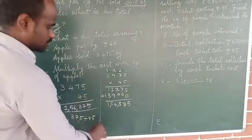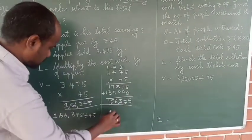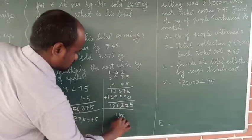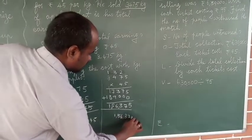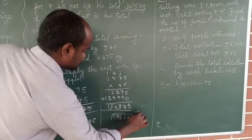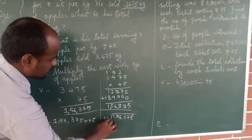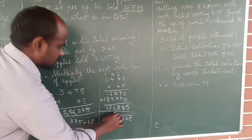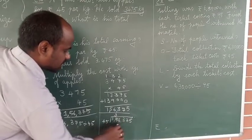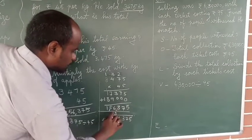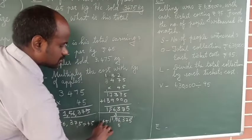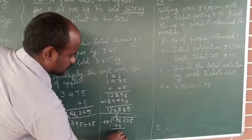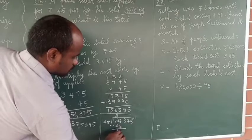Dividing 1,56,375 by 45. How many times does 45 go into 156? It goes 3 times. Three fives are 15, remainder 1. Three fours are 12, plus 1 is 13. Subtract: remainder is 21. Bring the next digit down — that is 3, giving 213.